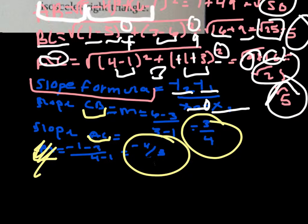What this means is that when slopes are opposite reciprocals, they are perpendicular to each other.